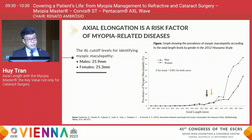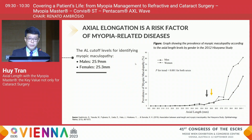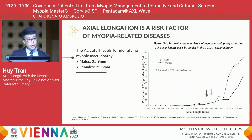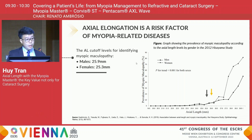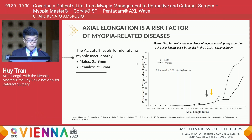Other evidence from Asian countries: in 2019, a result from data of the Hisayama study — over 3,000 Japanese residents — suggests that there was a higher risk of developing myopic maculopathy when the axial length exceeds 25.9 millimeters in males and 25.3 millimeters in females.